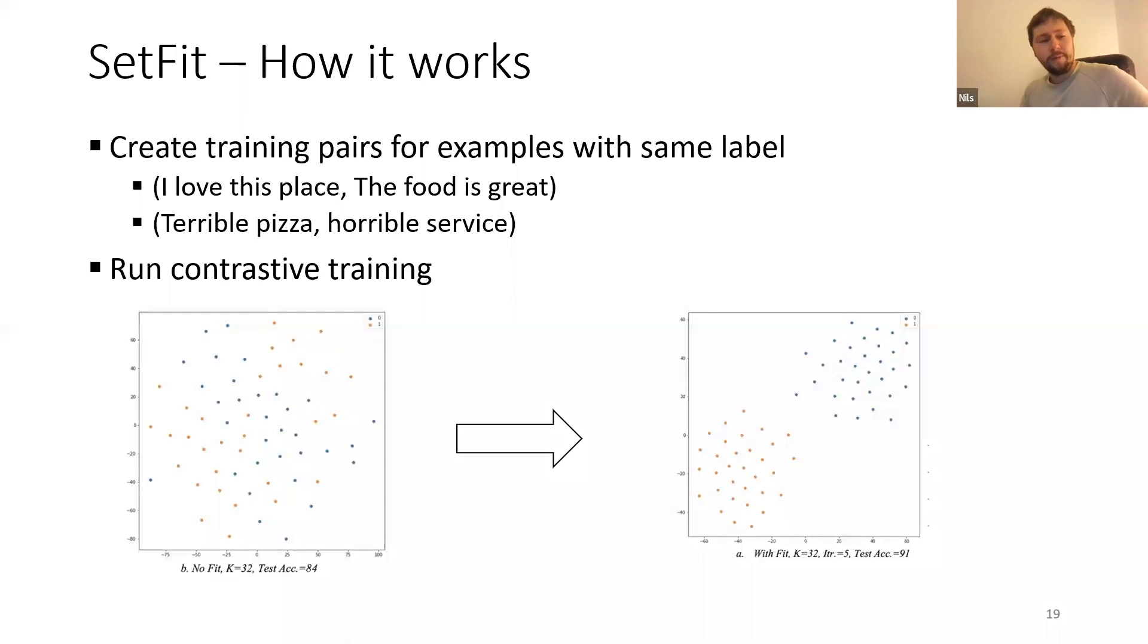And how it works. It works really similar to these embedding approaches. Here we form these pairs. In this case we take a pair that has the same label for sentiment classification. We say "I love this place" and "the food is great" and these are two examples that have the same label. They should be close in the vector space.